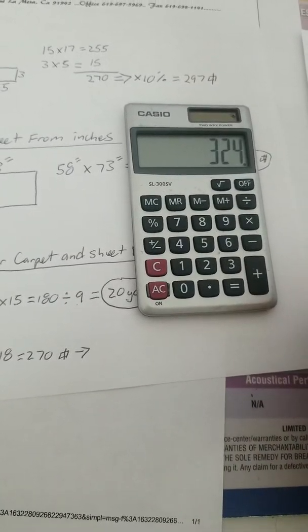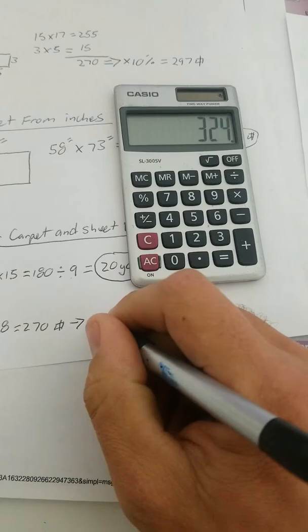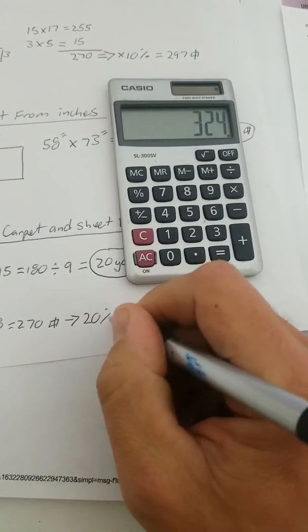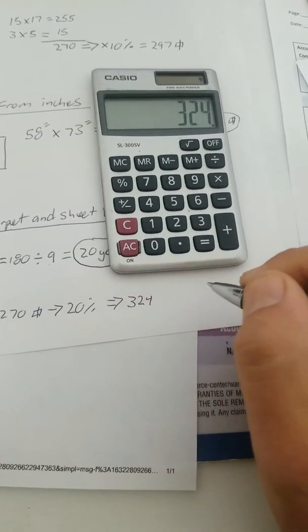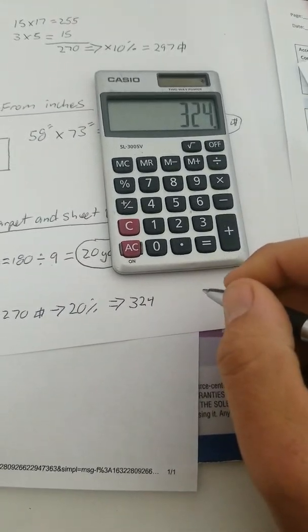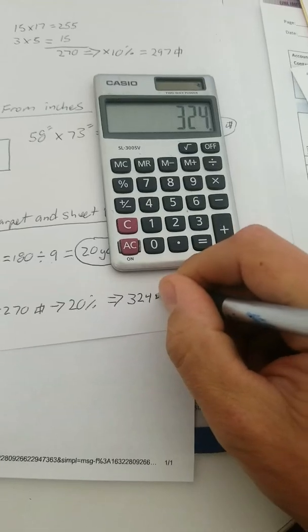I want you to add 20%. That gives you 324. 324. Is that yards? No, it's not yards. That's still square feet.